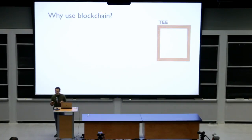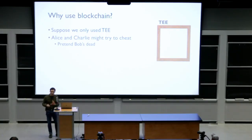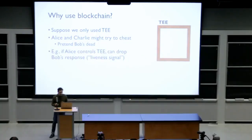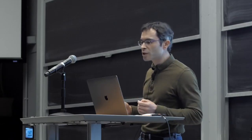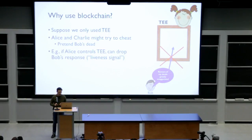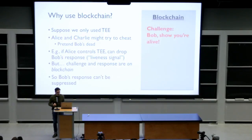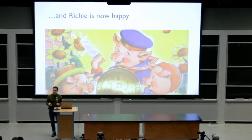Why do we need a blockchain for this — why not just use a trusted execution environment? If we just used a TEE, Alice and Charlie might try to cheat by pretending Bob is dead when he's actually around. If Alice controls the TEE, she could drop Bob's response — suppress his life signal. But because the challenge and response are on the blockchain, there's no way to suppress or censor Bob's response. This makes the solution robust and satisfying.